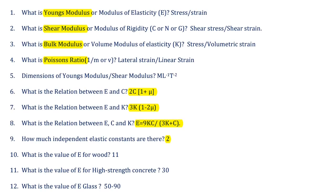To recap: the relation between E and C is E = 2C(1 + Mu); the relation between E and K is E = 3K(1 − 2Mu); and the relation between E, C, and K is E = 9KC / (3K + C). These three relations are very, very important.